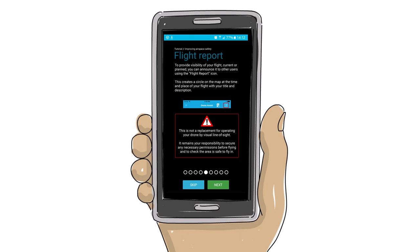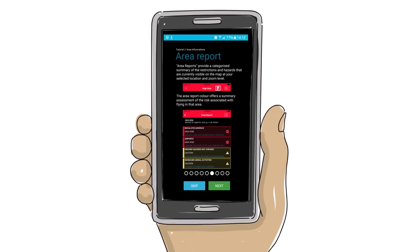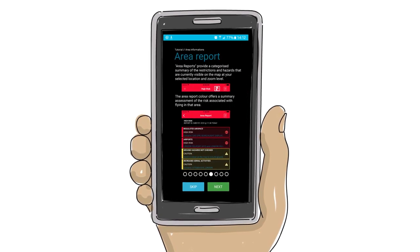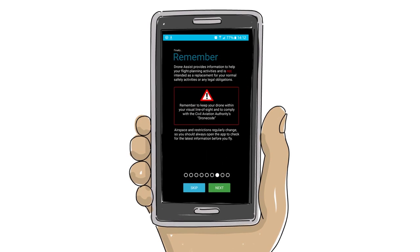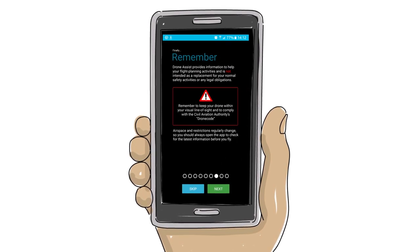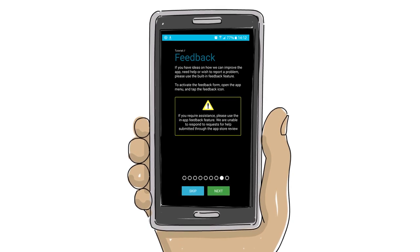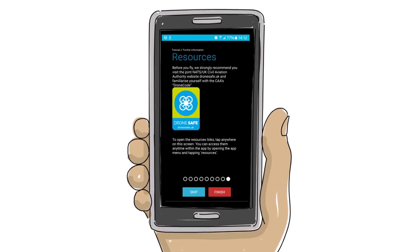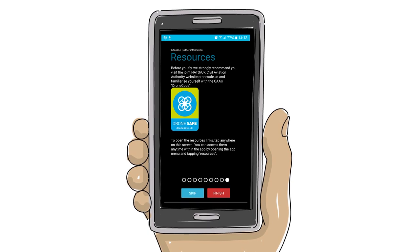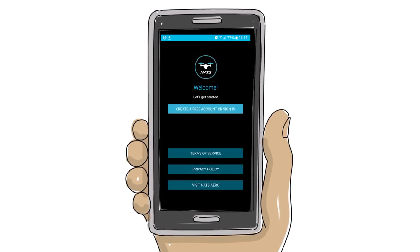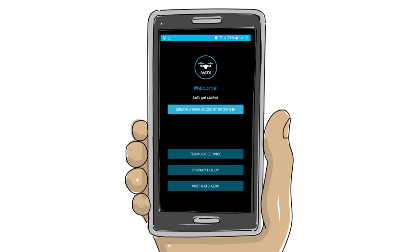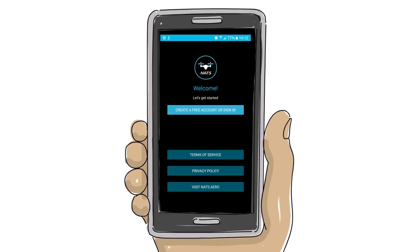It also contains a Fly Now feature that enables you to share your drone flight location with other app users and the wider drone community, helping to reduce the risk of a drone-related incident in UK airspace. It will help you to choose where it might be best to fly your drone, and where not to.